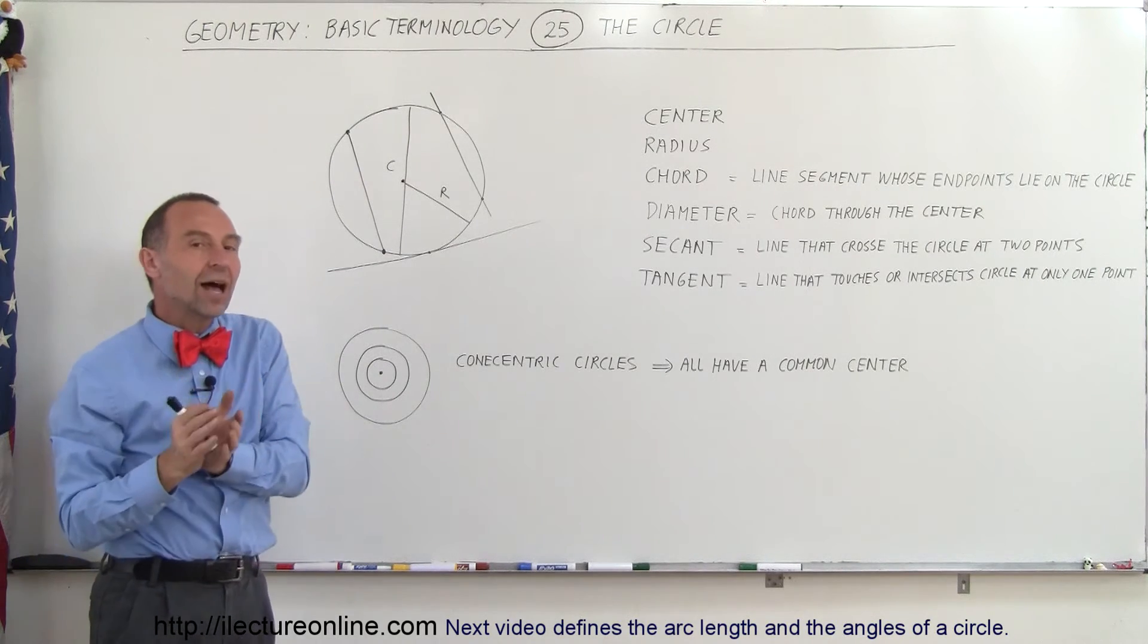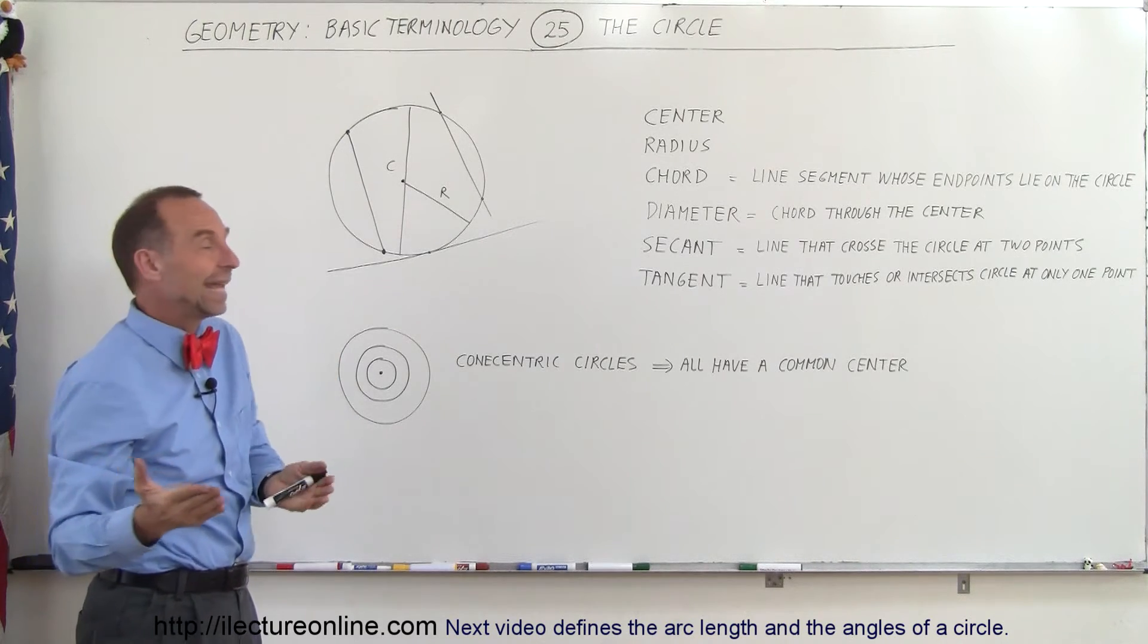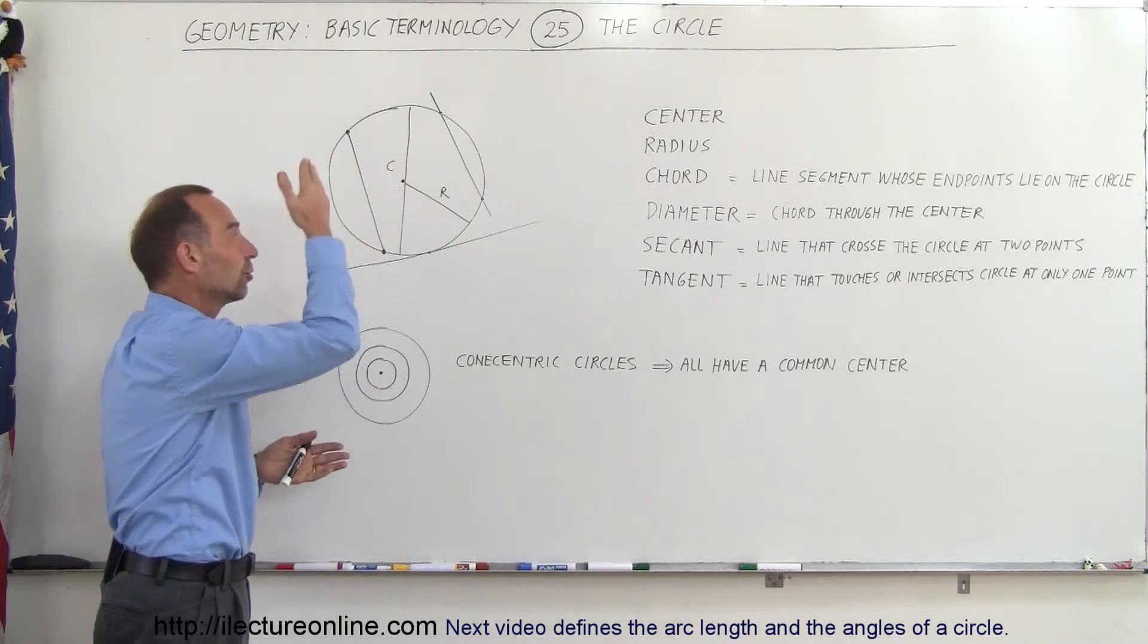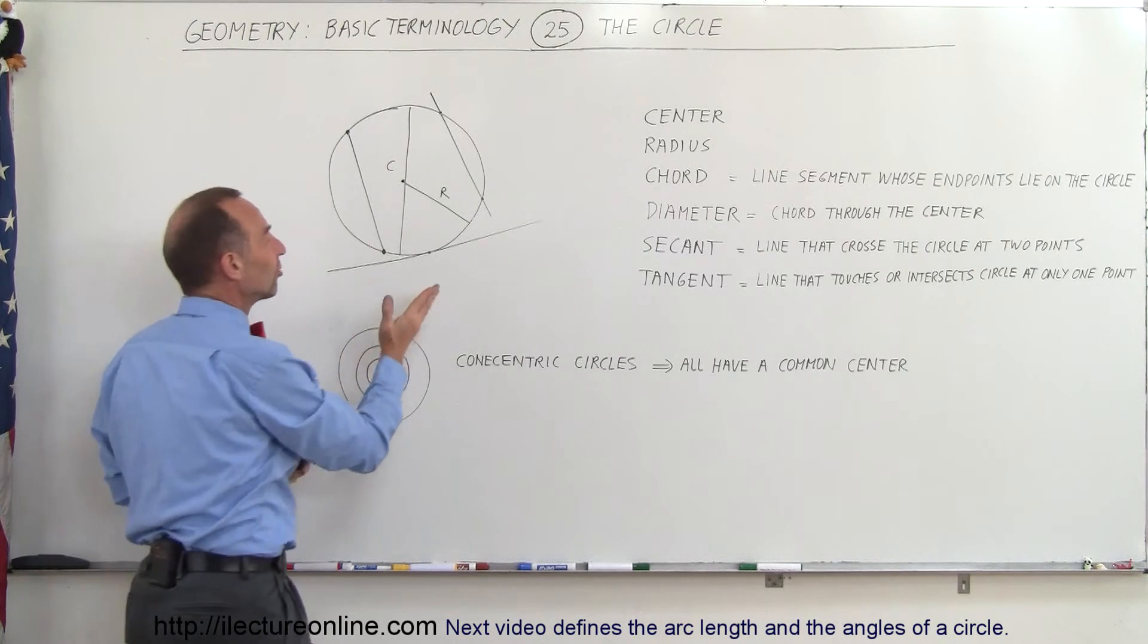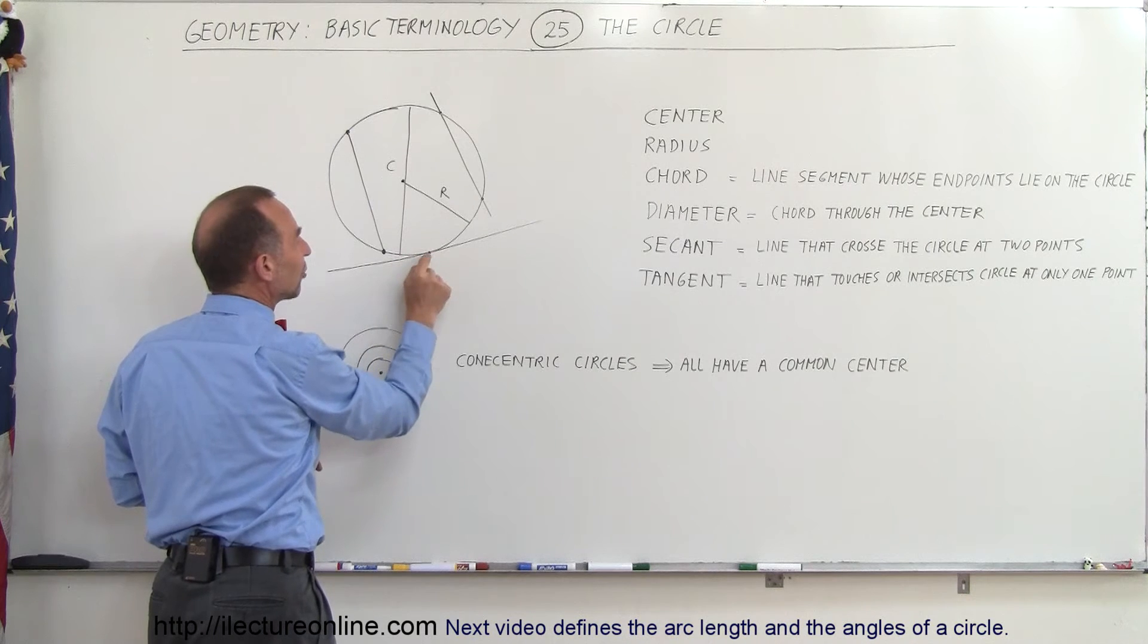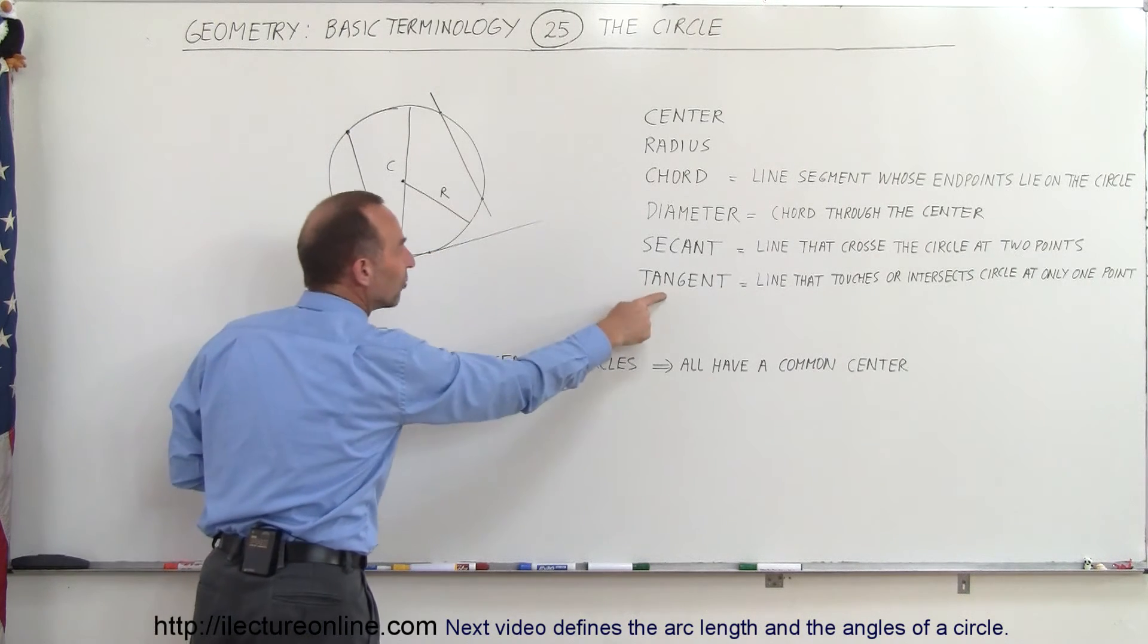A secant line is a line that runs through the circle and crosses it at two points. Any time you have a line that crosses through the circle, it will cross it at two points, with one exception. If the line just barely grazes the edge and only touches the circle at one point, then that line is called the tangent line.